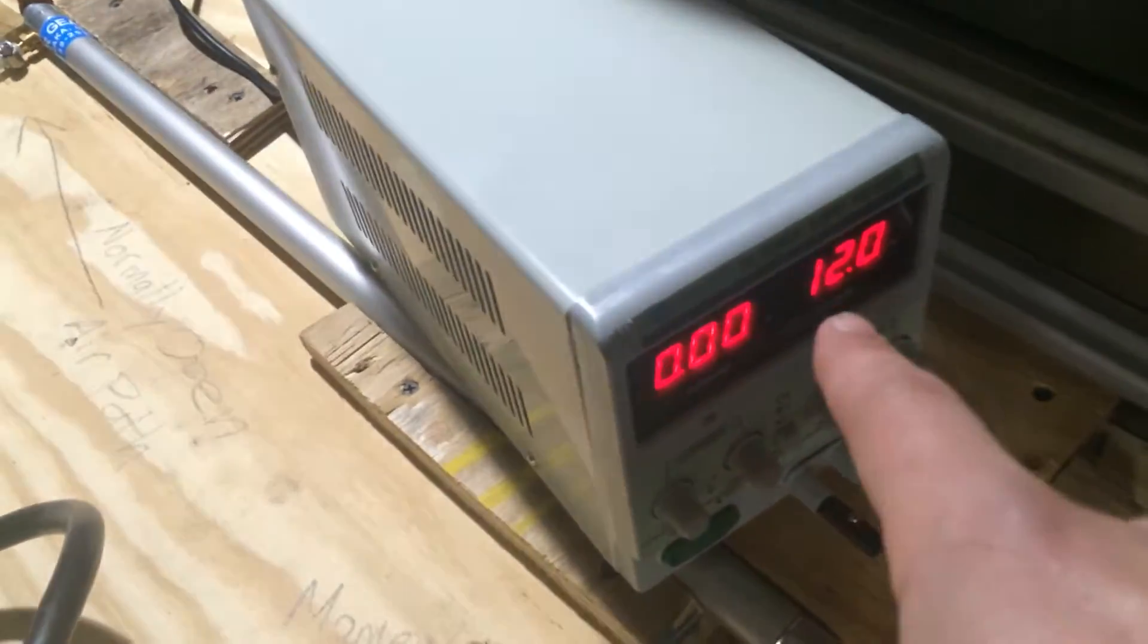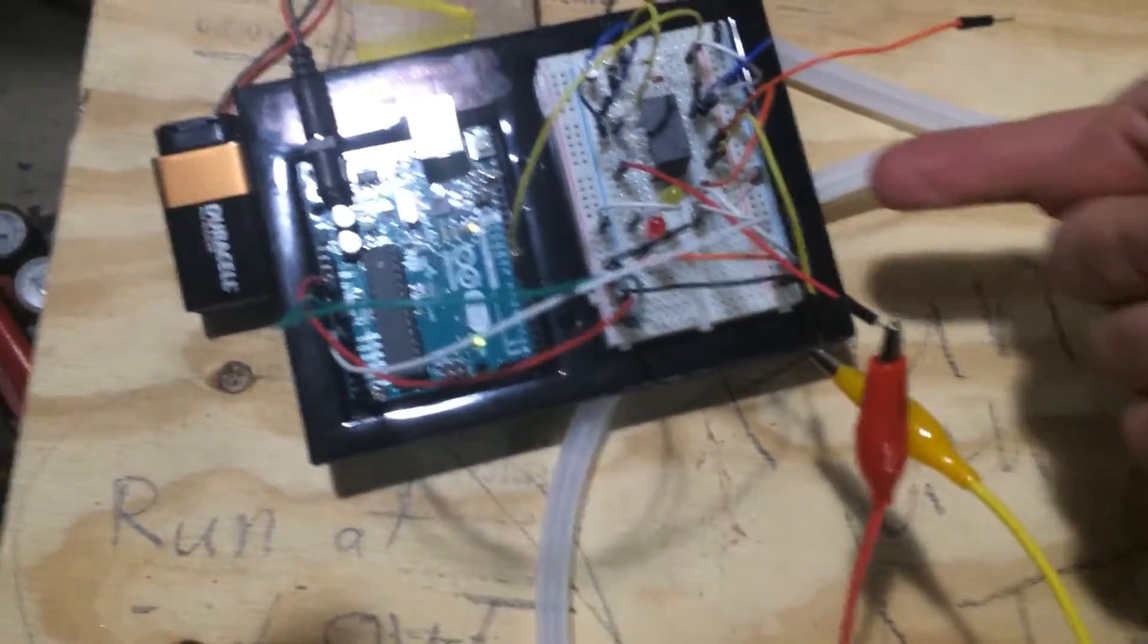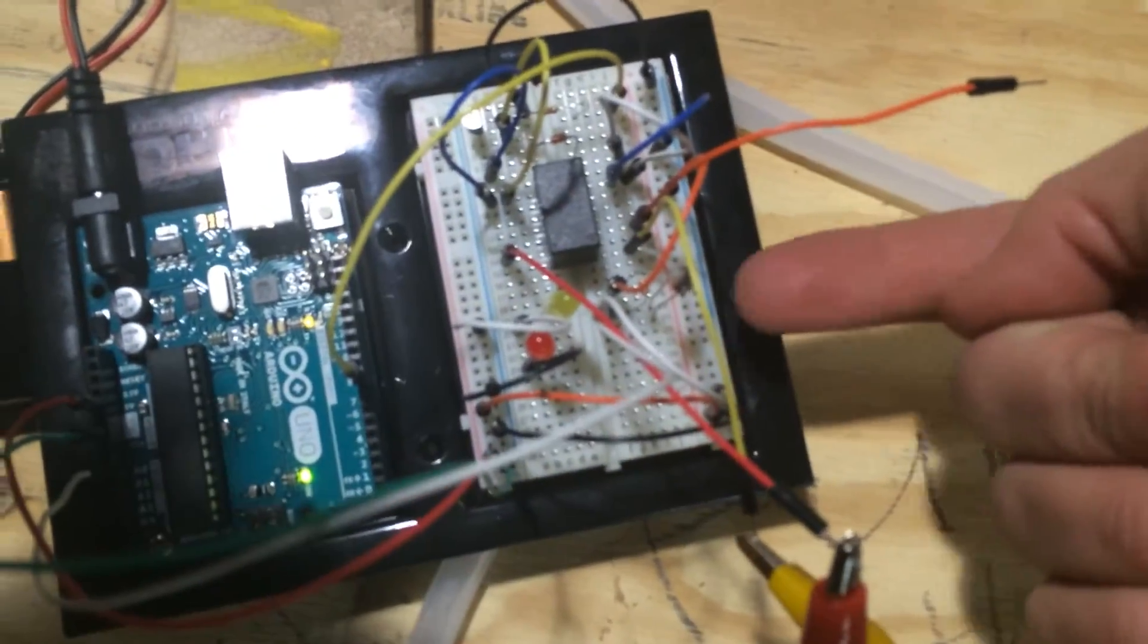That relay is hooked up to a 12-volt bench power supply. And then the programming and the sensor on the Arduino uses a light sensor for the moment.